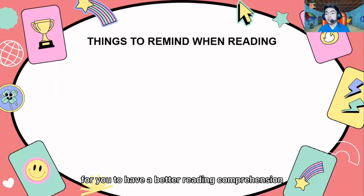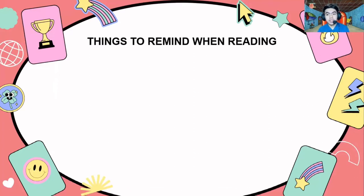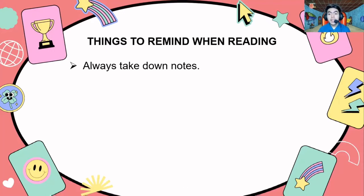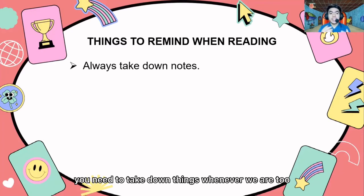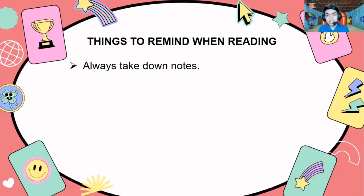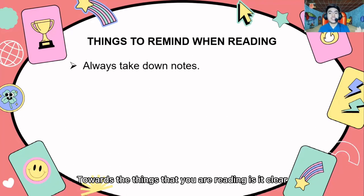With our discussion, I need you to keep some things in mind in order for you to have a better reading comprehension. I am now listing down the things to remember when you are reading. The most important thing is to always take down notes. If you have paper and pen on your side, it is important to use them because you need to take down things whenever you are doing reading tests or reading comprehension, or when you are simply reading. With that, you could have a better comprehension towards the things that you are reading.